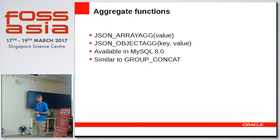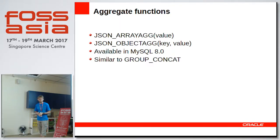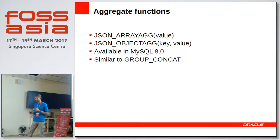In 8.0 we added JSON aggregate functions, which allow you to aggregate data into arrays and into objects. They behave similarly to GROUP_CONCAT. JSON_ARRAYAGG takes a single value and creates an array of those values within a group, while JSON_OBJECTAGG takes a key and a name and creates objects out of the group.